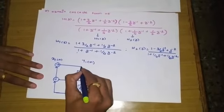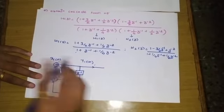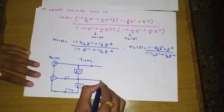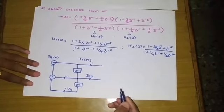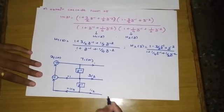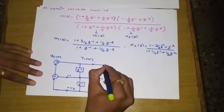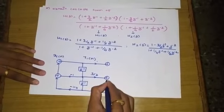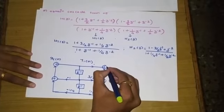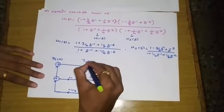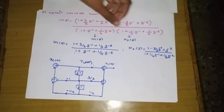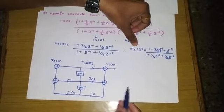For the all-zero (numerator) section of H1(Z): the first coefficient is 1, z⁻¹ is multiplied by +3/2, and z⁻² is multiplied by +1/2. Two adders are used to sum these terms, and the final output of this system is Y1(N). We will next realize H2(Z) in a similar fashion and cascade it.